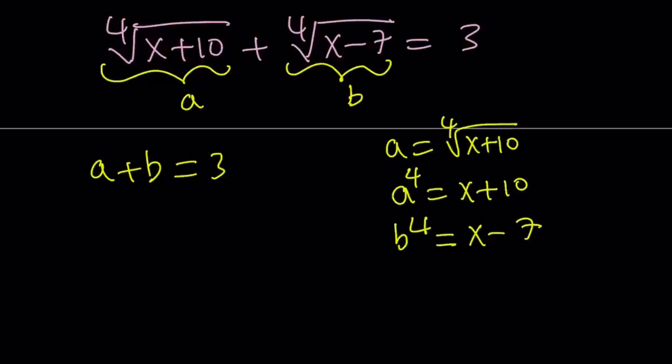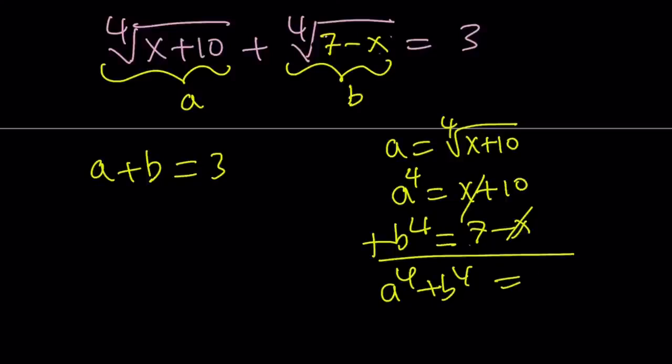Now, how does this help us? By the way, did I write x minus 7? That should be 7 minus x. I don't know why I wrote that. I apologize. I'm like, something should cancel out. Okay, here we go. So, that should be a 7 minus x. My bad. 7 minus x. And then when you add these up, you're going to get something nice. X is going to cancel out and you're going to get A to the fourth plus B to the fourth equals 17. Great. 10 plus 7. Easy.